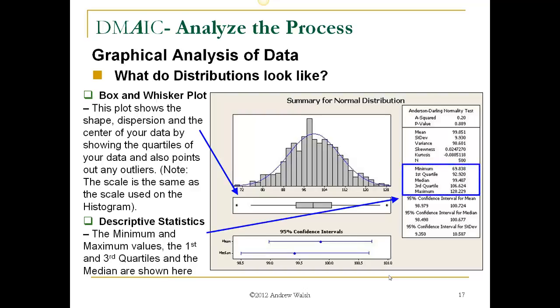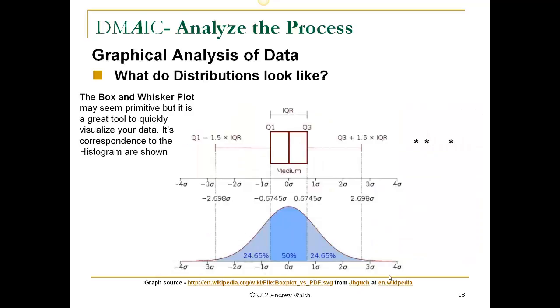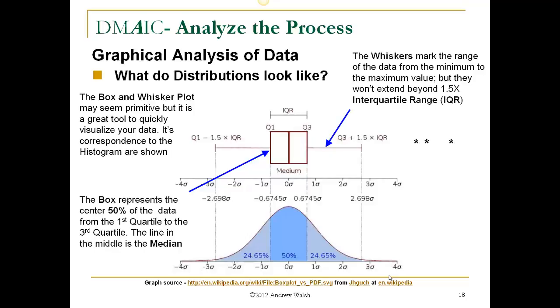Now the box and whisker plot may seem primitive, but it's a great tool to quickly visualize your data. Its correspondence to the histogram are shown in the graph list to the right. The box actually represents the center of 50% of the data, from the first quartile to the third quartile. The line in the middle is the median. The whiskers mark the range of the data from the minimum to the maximum value, but they won't extend past 1.5 times the interquartile range, the IQR. Now any data that's beyond that are considered to be outliers, and their positions are marked as an asterisk. So actually, the box and whisker can point out data that may be considered an outlier, where the histogram does not. You'll have to just visually see that.